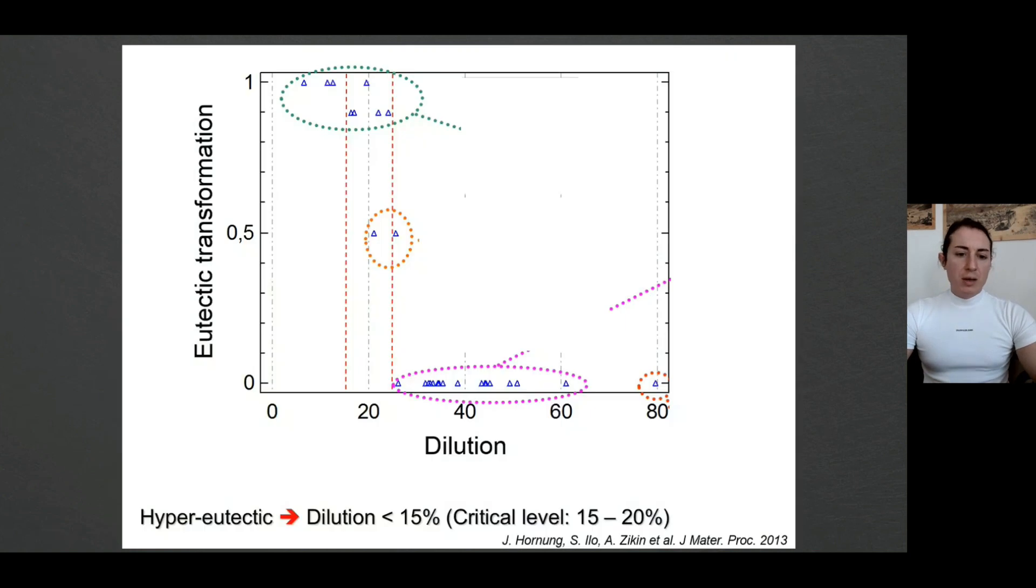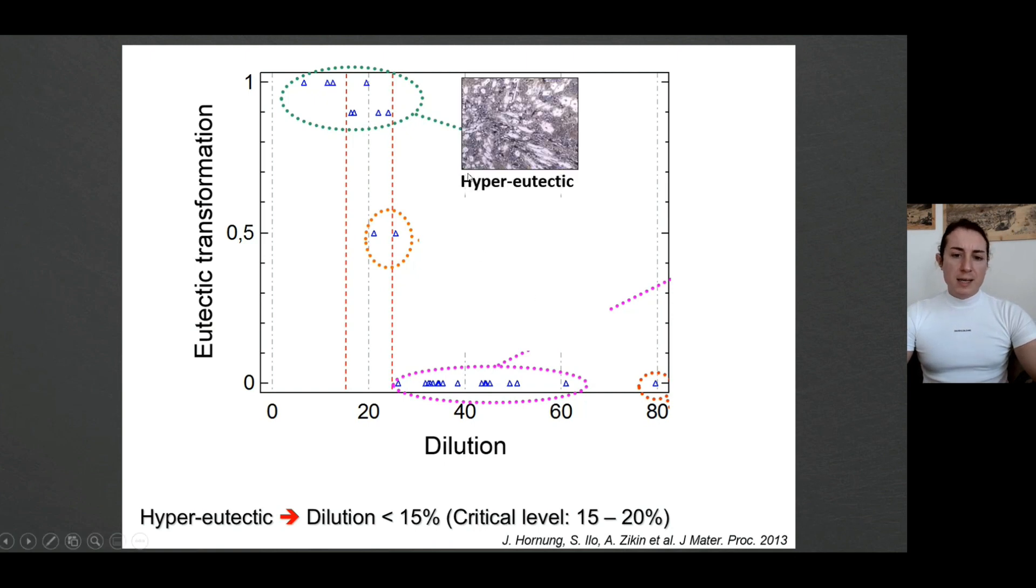What happens to this alloy if we look on a plot and if we change dilution values and play with energy input? We find out that for PTA process, if you're below let's say 20 to 25% of dilution—I would say even you should be more between 15 and 20—it might turn to a critical level where your hypereutectic alloy consisting of M7C3 suddenly does not work the way you want, so the amount of hard phases is decreasing.